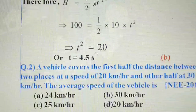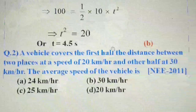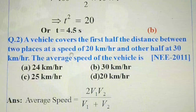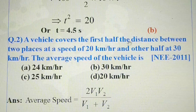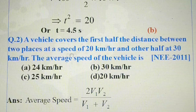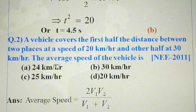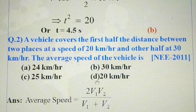See the next question. If a vehicle covers the first half of the distance between two places at a speed of 20 km per hour and the other half at 30 km per hour, find the average speed of the vehicle.